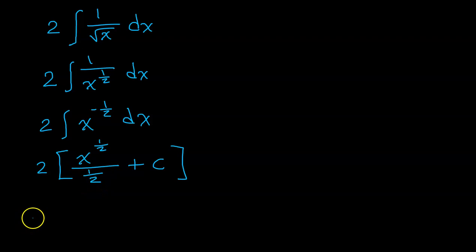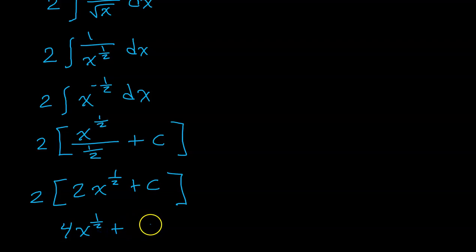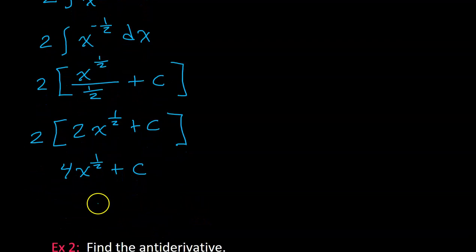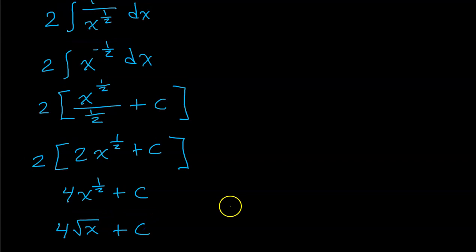When you divide by a fraction, you multiply by the reciprocal. So this will be the same thing as 2 times x to the 1/2 power plus c. When you distribute the 2, you will have 4x to the 1/2 power plus 2c. But since c represents a generic constant, 2c is just another generic constant, so we keep the constant of integration as c. Since we started with radicals, let's write the final answer as 4 times the square root of x plus c.